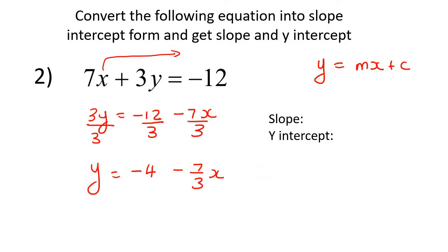So now let's get the slope. The slope is always the number in front of the x — and it's not just the 7, it's this whole number: negative 7 over 3. So that would be your slope, and then the other number, negative 4, is your y-intercept.